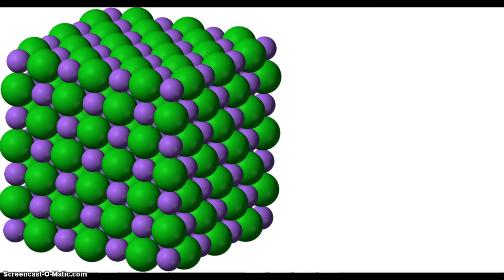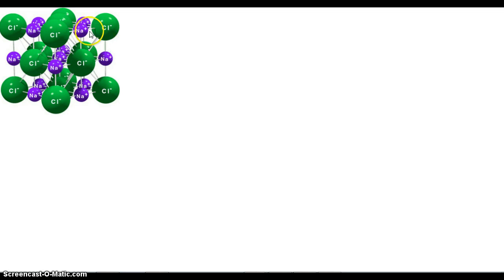If we look at another picture where it's labeled sodium and chloride, we remember that sodium has a plus one charge and chloride has a minus one charge. So not only do they alternate sodium and chloride, but it's also alternating positive and negative charges.